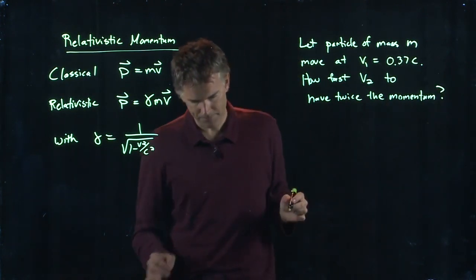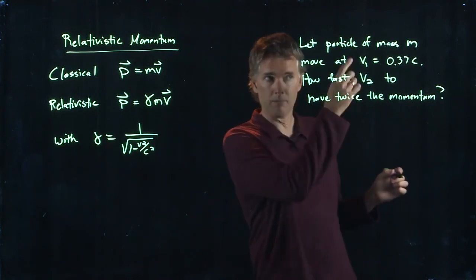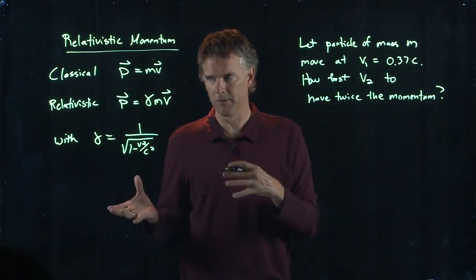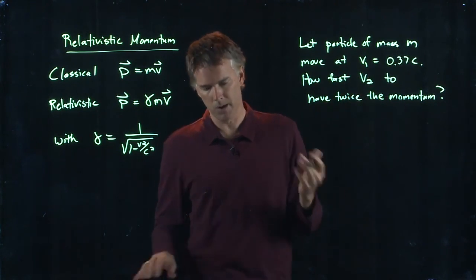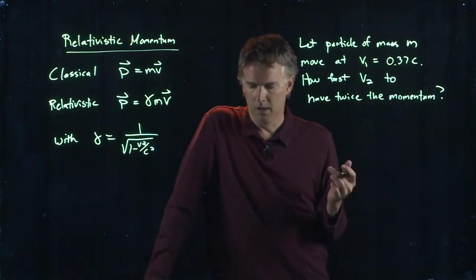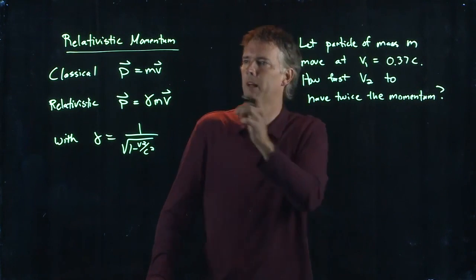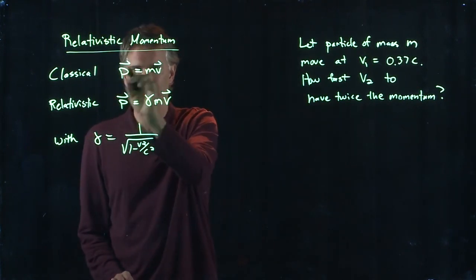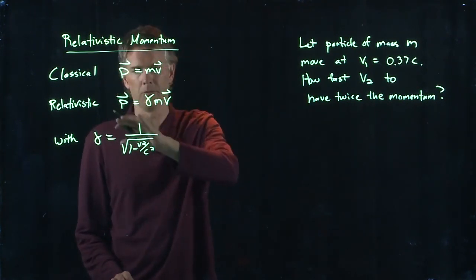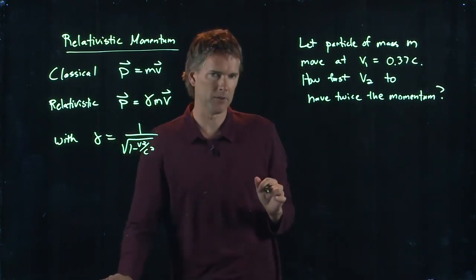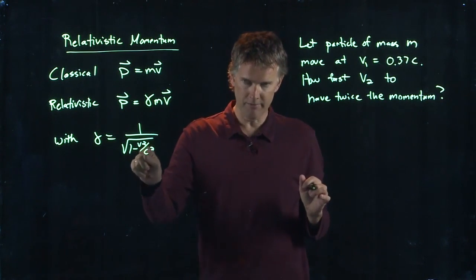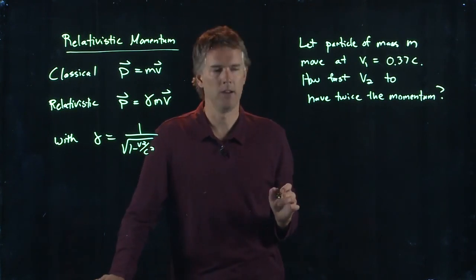So particle moving at v1, it's got some momentum. We want to go faster to v2 and we want to hit twice the momentum. If you were in the classical world, obviously you would just double it, right? Double v, it doubles the momentum. But now in this relativistic world, we have this factor gamma, which has v in it.